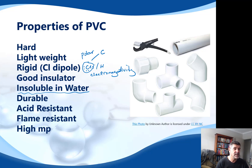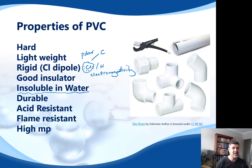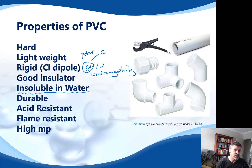If you've handled PVC, you know it's very lightweight but still quite hard and rigid. The presence of the chlorine atom increases rigidity and strengthens the bonds between different chains of PVC, holding them tightly together. This makes PVC a little brittle — it can snap and isn't really malleable. There's also some flame resistance, acid resistance, and the chlorine atom increases the melting point.